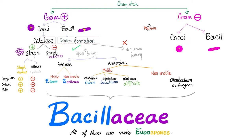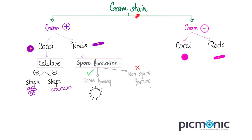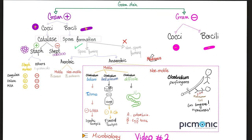Are they motile or immotile? Well, it depends. Mostly they are motile, such as Clostridium tetani, Clostridium botulinum, and Clostridium difficile. Only one is non-motile, which is Clostridium perfringens. So again, they are gram-positive rods, spore-forming, strictly anaerobic, mostly motile, but only one is non-motile.